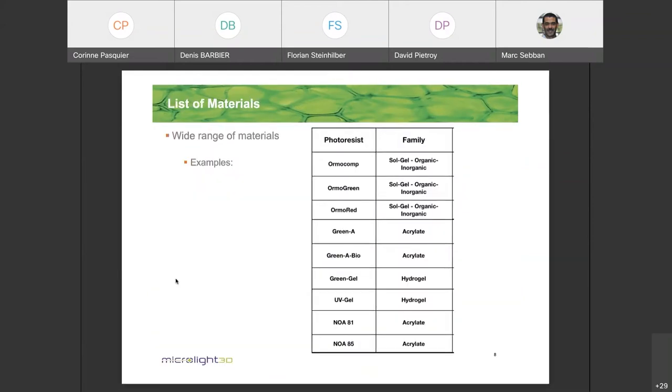Very important point is that we can print in a wide range of material. Obviously, this material have to be photo sensitive. So we call them photo resist. They have to be able to absorb light to start to polymerize. Here is a table with different type of photo resist. Let's go through the family.